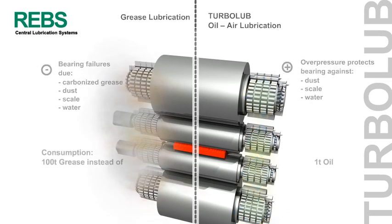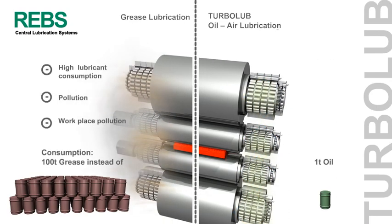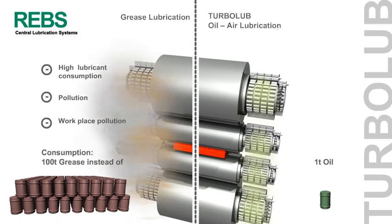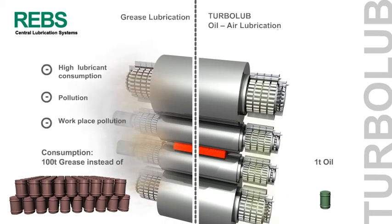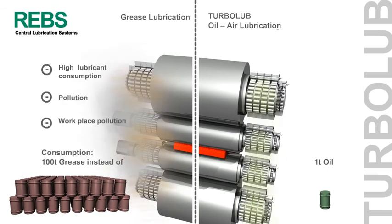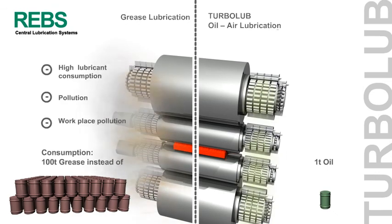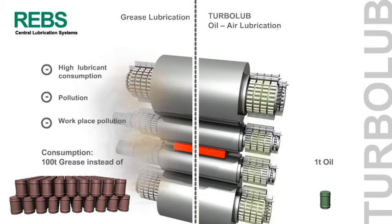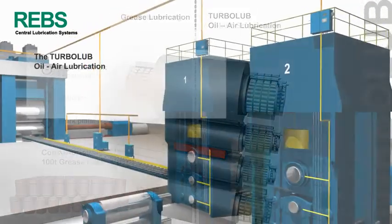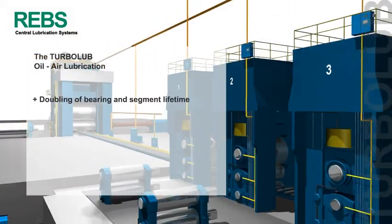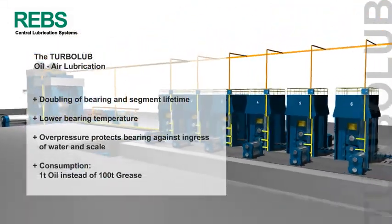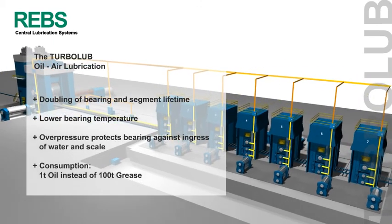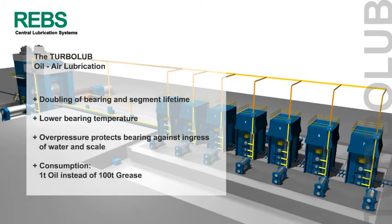A further advantage of the Turbuloop system in comparison to standard systems is the minimum consumption of lubricant. Instead of 100 tons of grease per year, the Turbuloop system only needs one ton of high viscosity oil, providing bearing lubrication which is considerably more efficient. Profit from the numerous advantages of the Turbuloop system for your productivity.